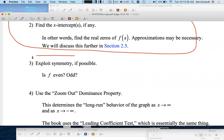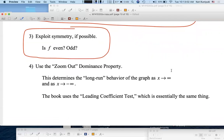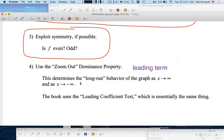Symmetry. If the function is even or odd, you may be able to exploit symmetry. The zoom out dominance property. Look at that leading term. Based on the leading term, do you know what kind of snake or bull you're getting? And you can determine long-run behavior.